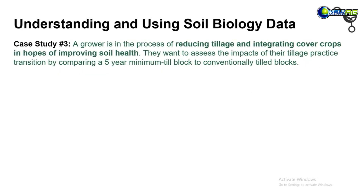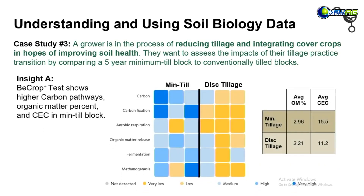In this last case study, a grower is reducing tillage and integrating cover crops to improve soil health. They want to assess the impacts by comparing a five-year minimal-till or vertical-till field to a conventionally tilled disc-till field. Looking at carbon pathways on the heat map tool, there's a lot more blue on the minimal-till side with much higher carbon fixation, whereas the disc-tillage field shows a lot more yellow. Mycorrhizal fungi are effective carbon fixers, so that may be one factor driving this trend.